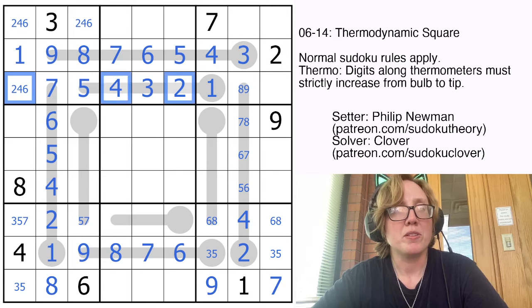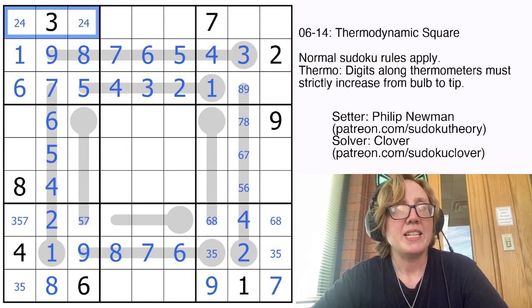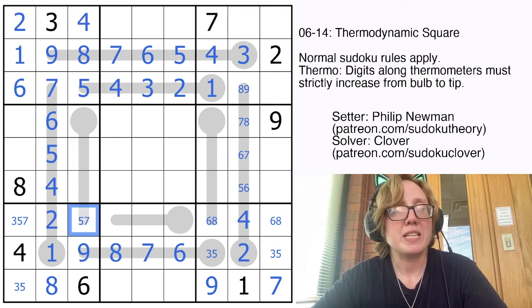This also can't be a 2 or a 4 because those are in the row already. And this can't be a 4 because there's a 4 in the column. So we finished that entire region.